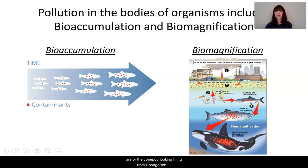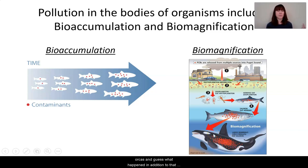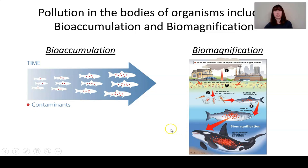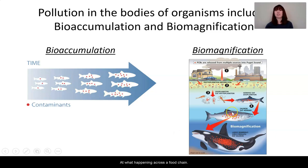Those zooplankton are food for small fish like herring. Those herring are food for salmon. And those salmon are food for orcas. In addition to the matter and energy transformation you've learned about, there is a movement of chemicals through that food chain. All those chemicals build up throughout the food chain so that the orca ends up with all the contaminants from the phytoplankton, zooplankton, herring, and salmon as it eats those salmon. That's biomagnification — the difference between what's happening in an individual organism versus across an entire food chain.